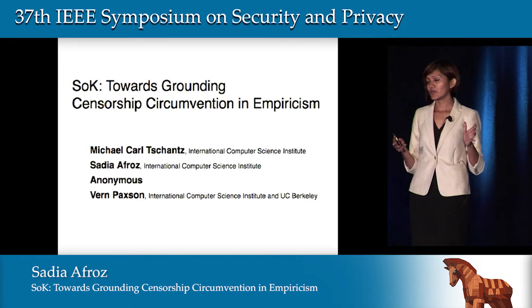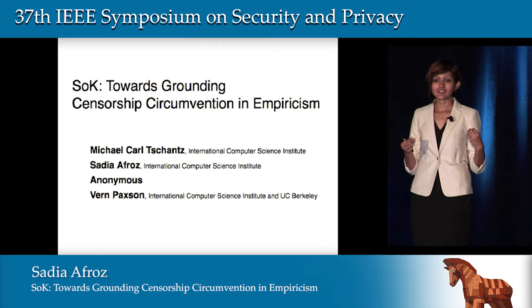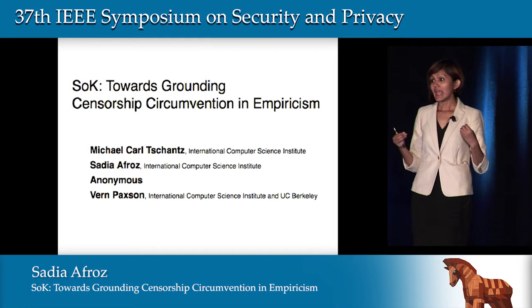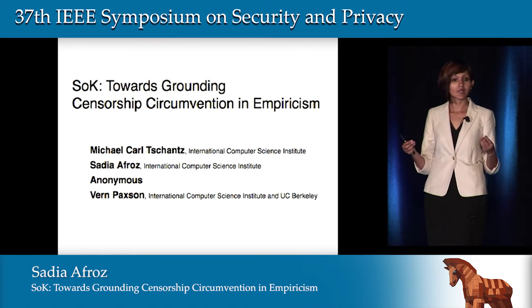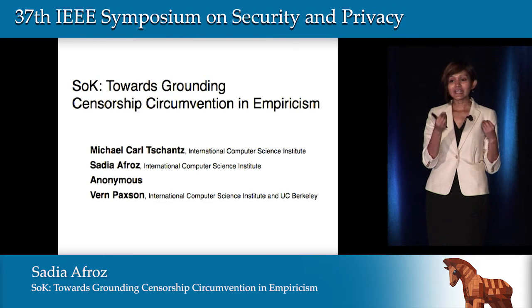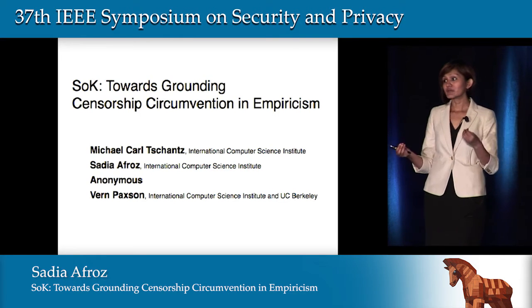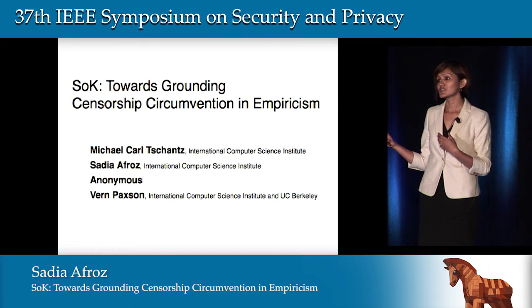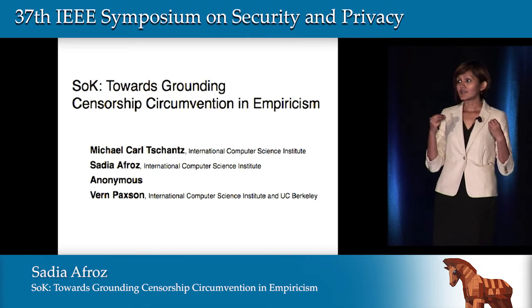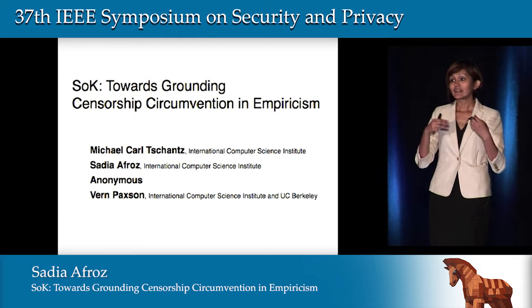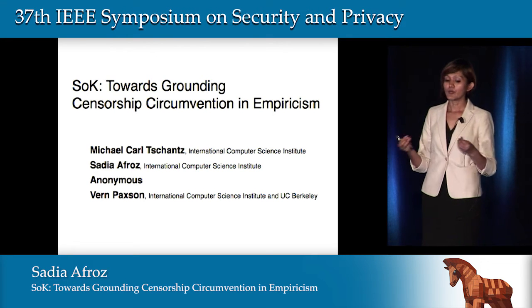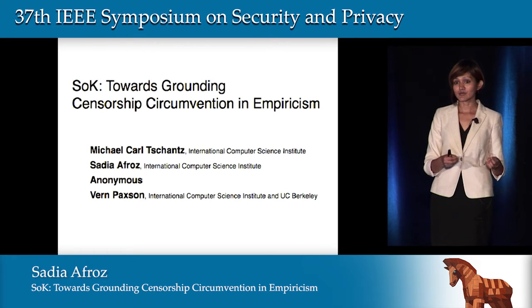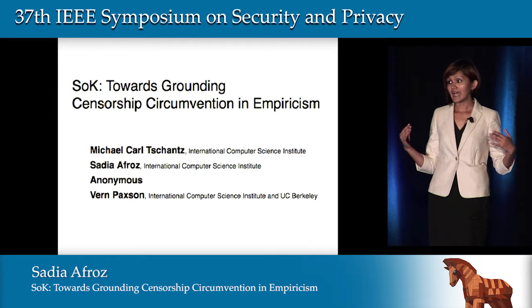The goal of this paper is to understand the real-world censorship problems we face today and how research in censorship circumvention addresses them. We start by looking at how censors do censorship in the real world and then relate that threat model with the threat models of the circumvention systems we see in research. We found that deployed circumvention tools align with real-world censors, but research focuses on censors that do not exist today.